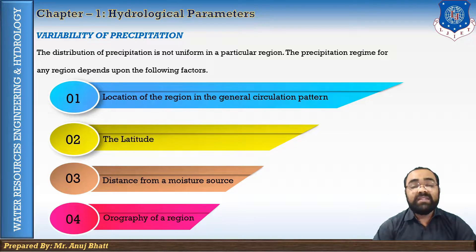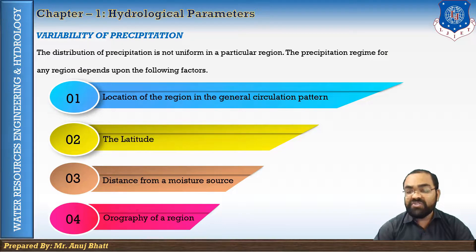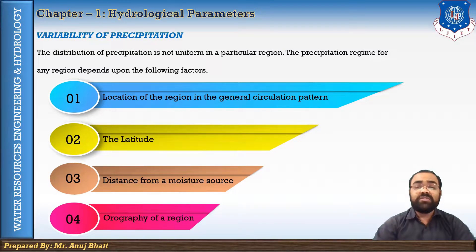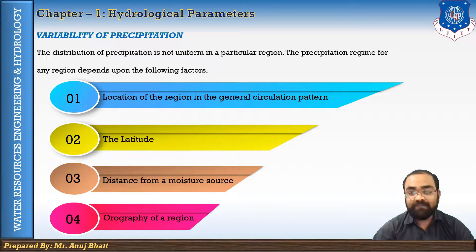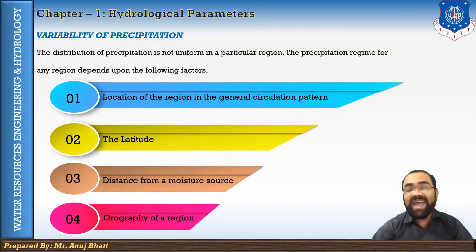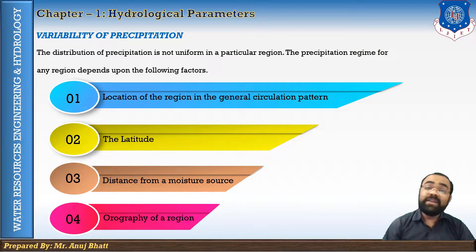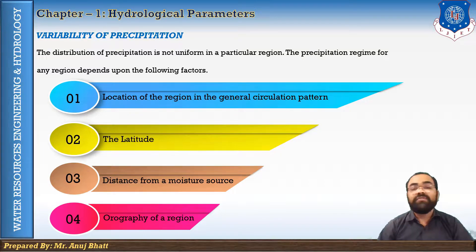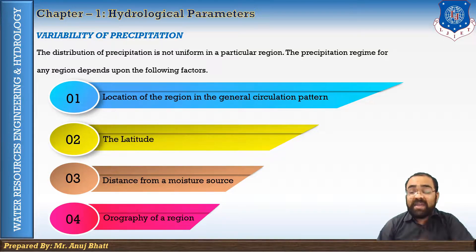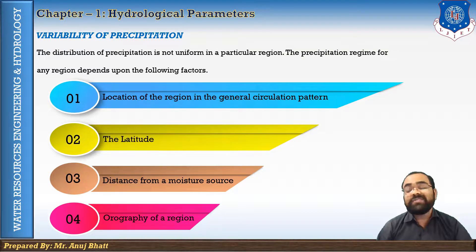Discussing the first factor in detail — the location of the region in the general circulation pattern. The thermal circulation originates from the sun. About 40% of the radiant energy of the sun is reflected back from the upper surface of clouds, and the remaining 60% is absorbed by the earth with small losses.